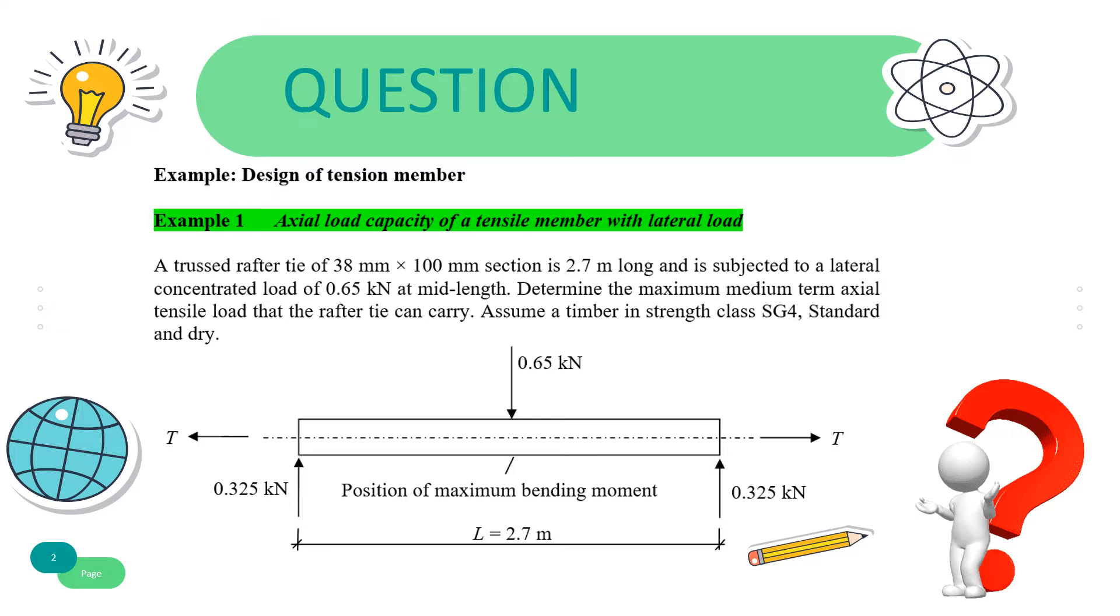Here is the question. A truss rafter tie of 38 mm x 100 mm section is 2.7 m long and is subjected to a lateral concentrated load of 0.65 kN at mid-length. Determine the maximum medium term axial tensile load that the rafter tie can carry. Assume a timber in strength class SG4, standard and dry.